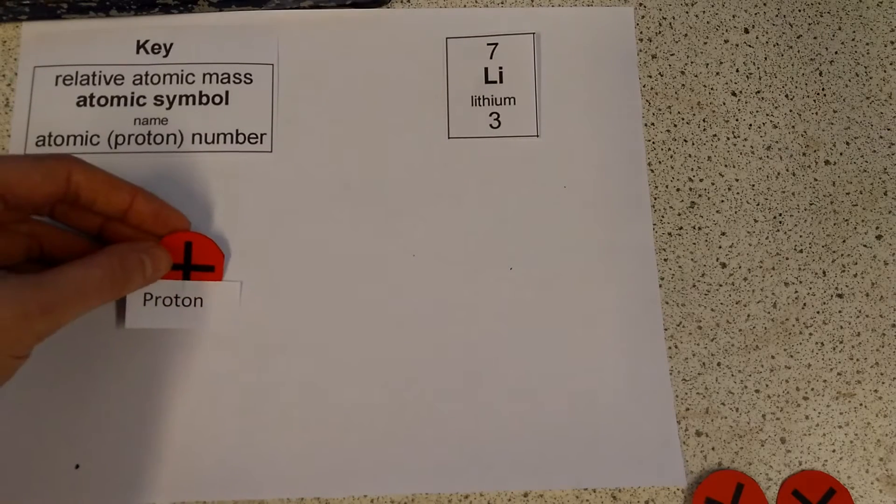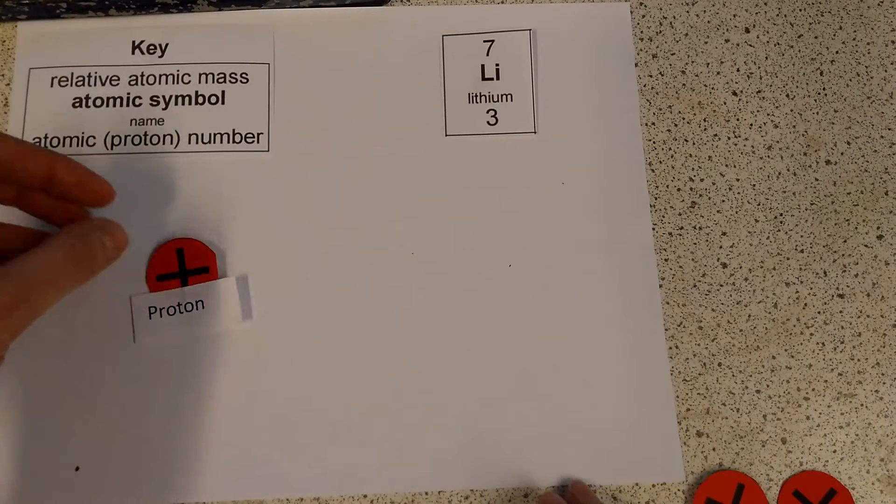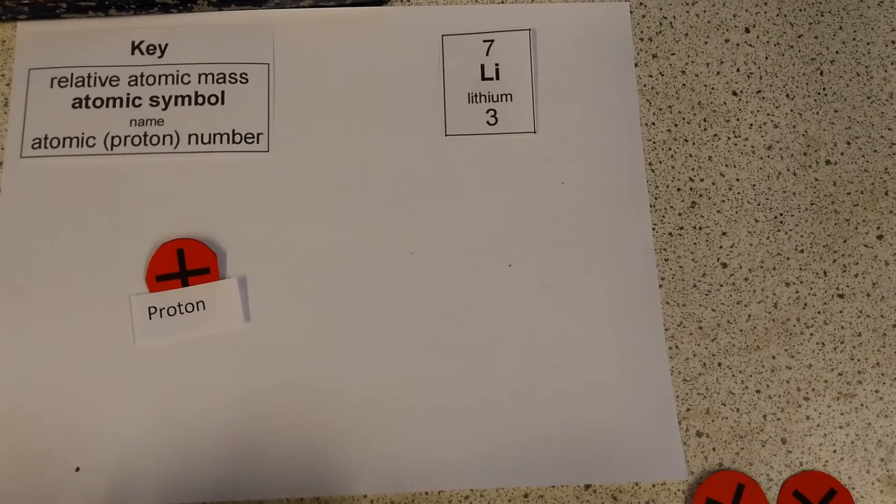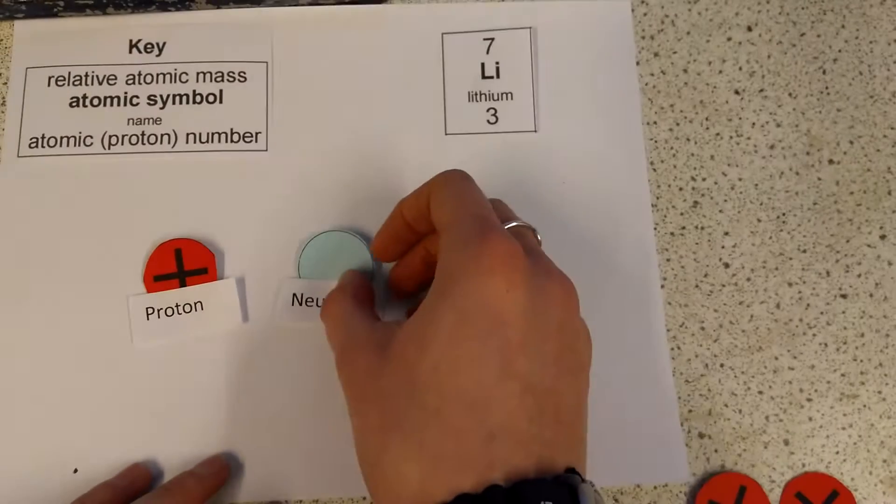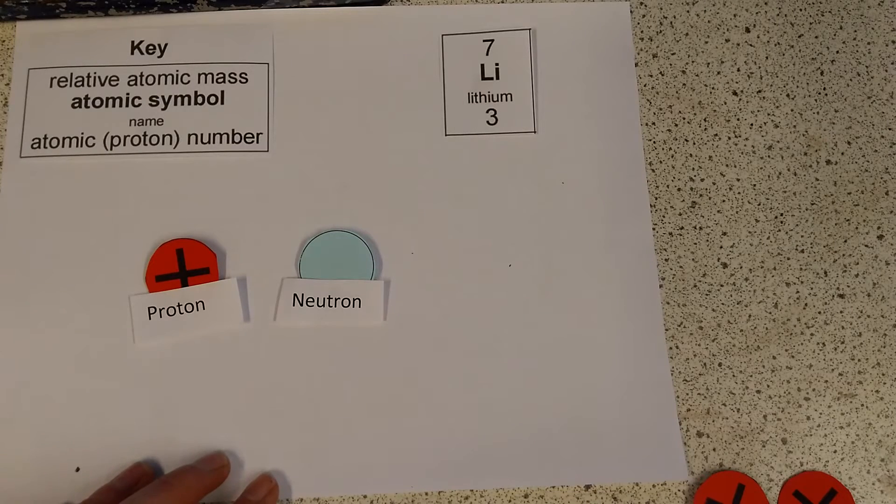First of all we've got our positive protons, and you can see here it's got this little cross on it, this little plus sign, to show us that it is positively charged. And then we've got our neutrons, and that one doesn't have a plus and it doesn't have a minus, because it doesn't have a charge, we just say that it is neutral.